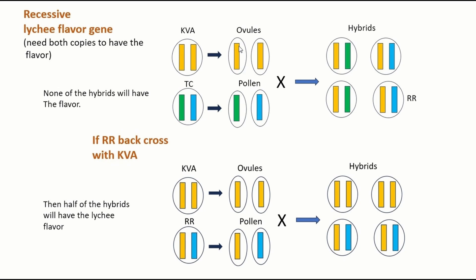When pollen pollinates the stigma, all these germ cells can randomly pair with each other to form the new hybrid cells. So the yellow one can pair with the green to form a new hybrid cell, and yellow can pair with blue to form this type of cell. You can see that in all hybrids none of them have a chance to have two copies in the same cell like their KVA mother. So that's why none of the hybrids have the lychee flavor.